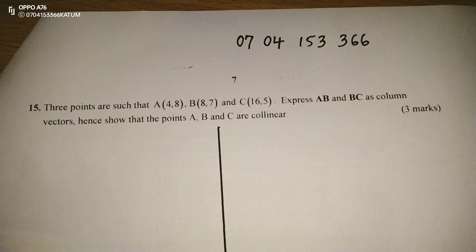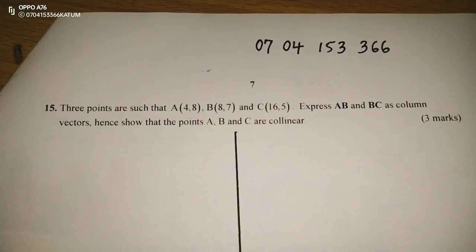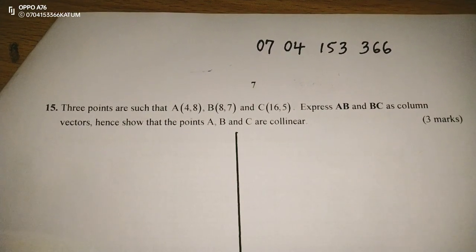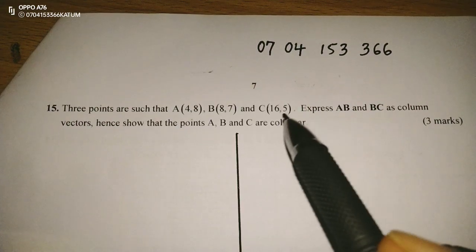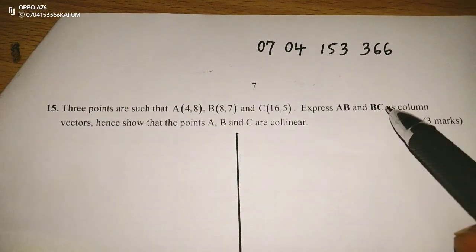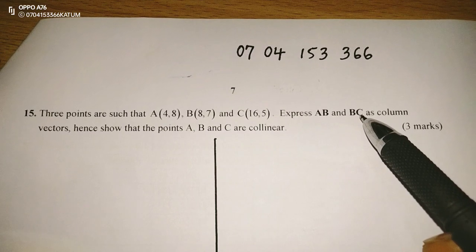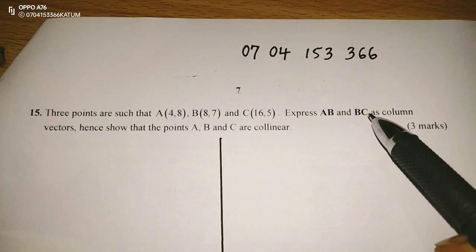We are given in question 15 that three points are such that A is (4, 8), B is (8, 7), and C is (16, 5). Express AB and BC as column vectors and show that the points A, B, and C are collinear.